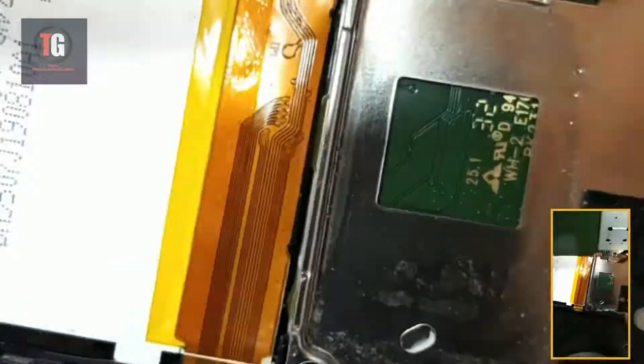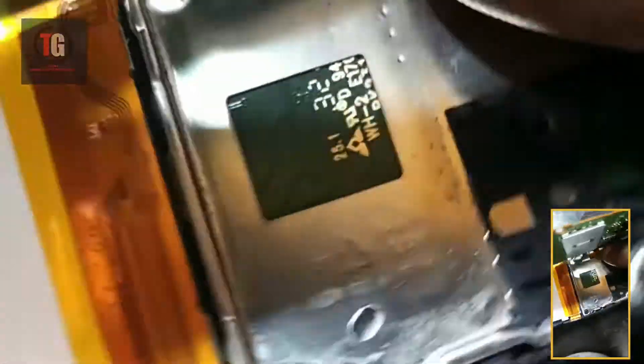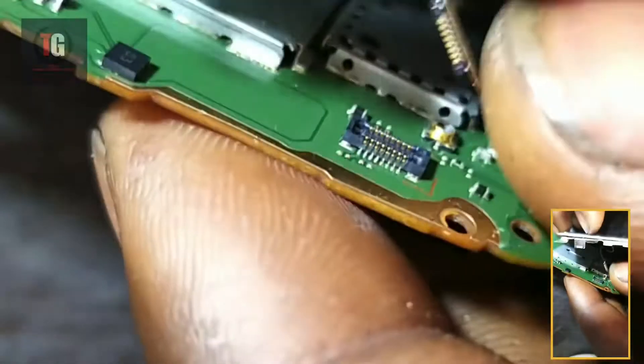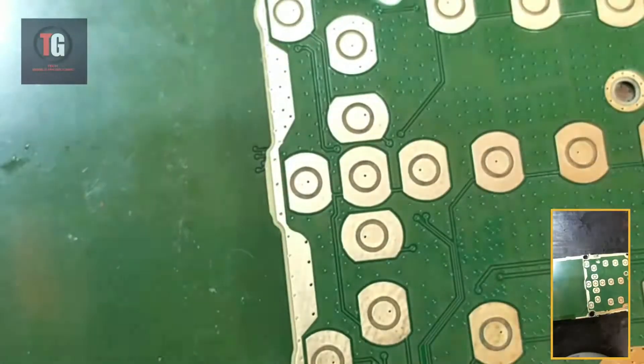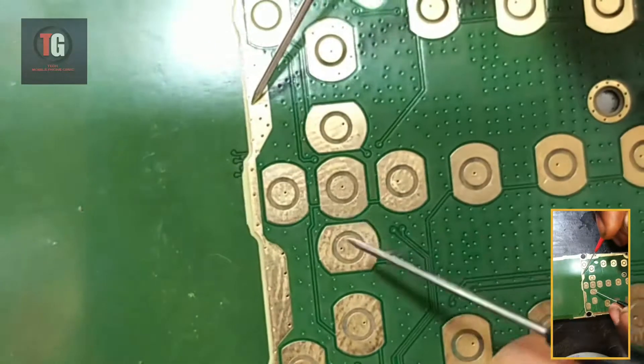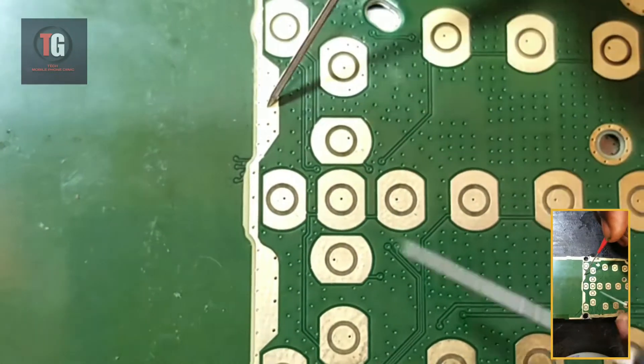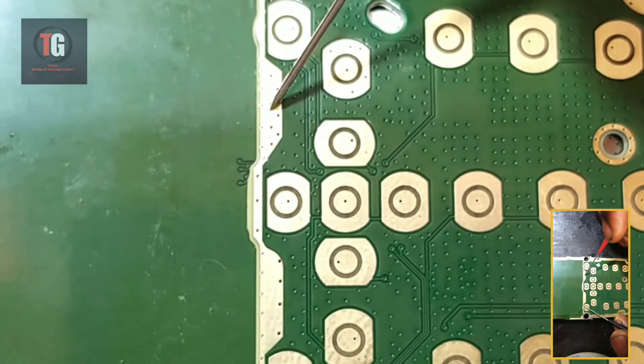One of the reasons why this phone is having most of this issue is because the majority of this phone always have keypad issues. What normally happens is when the tracks going to the keypad break down. You can see the middle one is not working, those middle keypads are not working. The side is working.